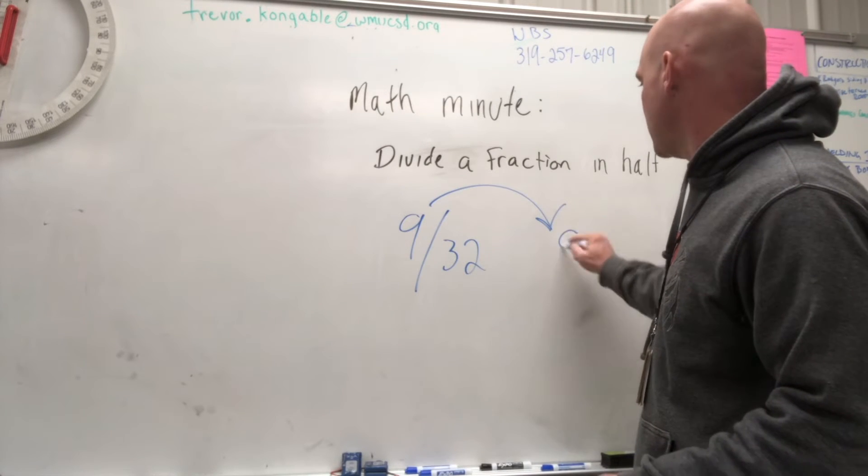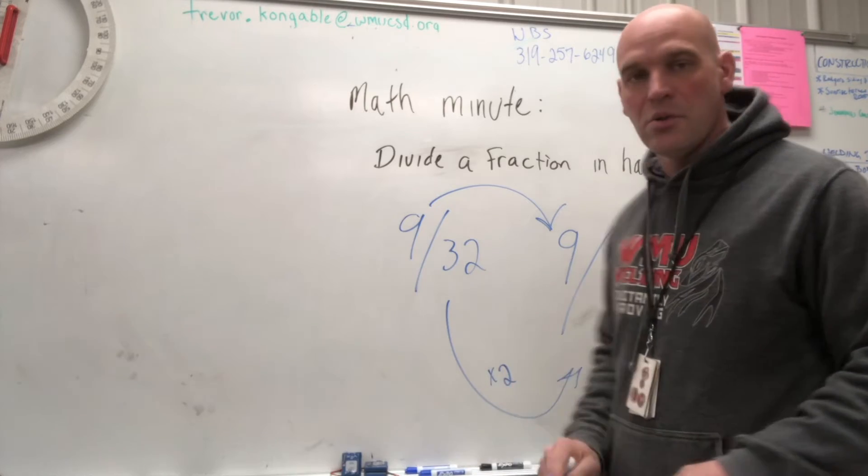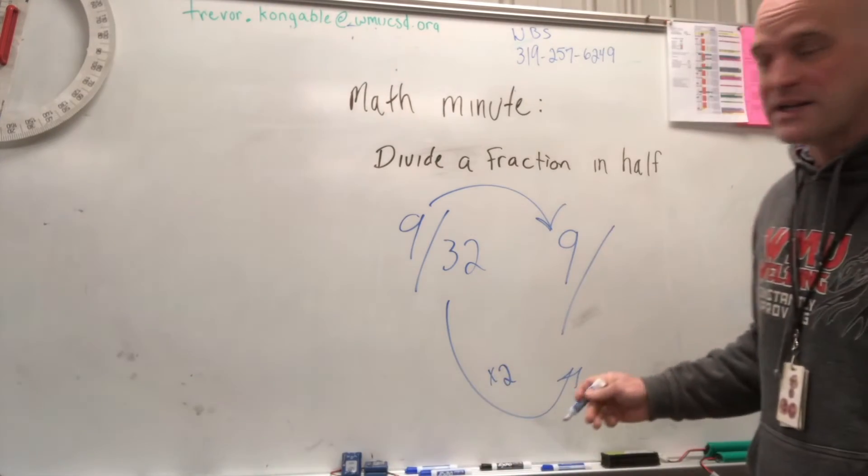Bring the top number over, multiply the bottom number by two.